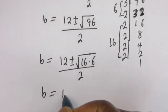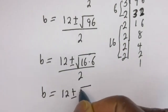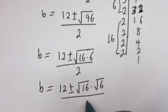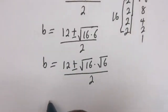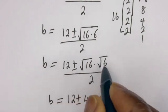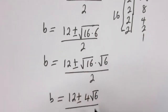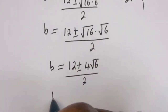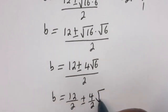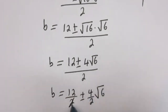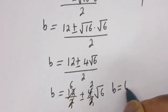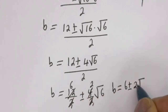The square root of 16 is 4, so we have b equals 12 plus or minus 4 root 6, divided by 2. Simplifying, b equals 12 divided by 2, plus or minus 4 divided by 2 times root 6, which gives b equals 6 plus or minus 2 root 6.